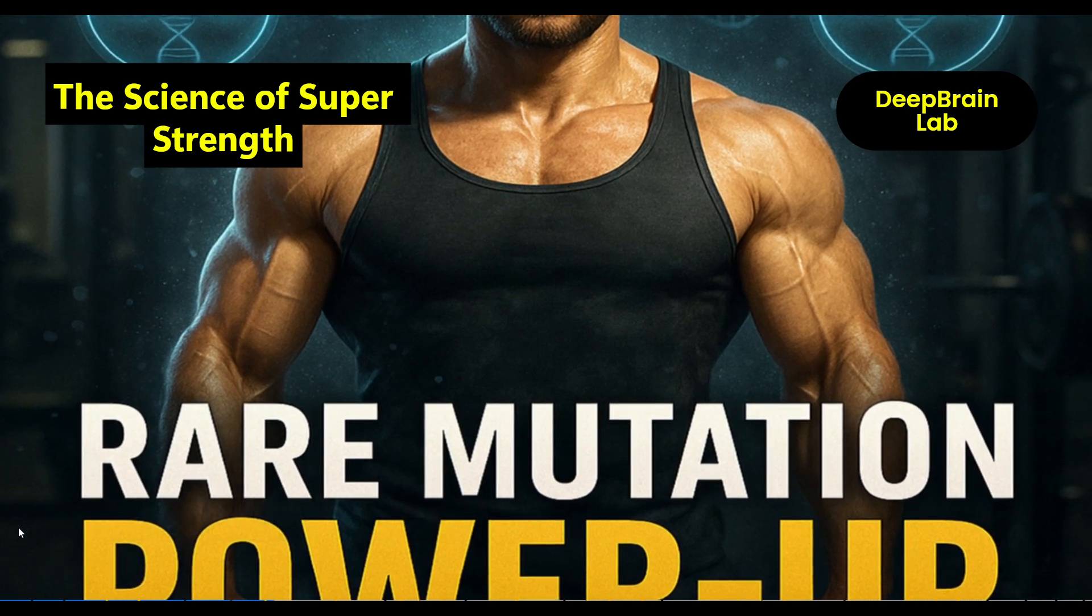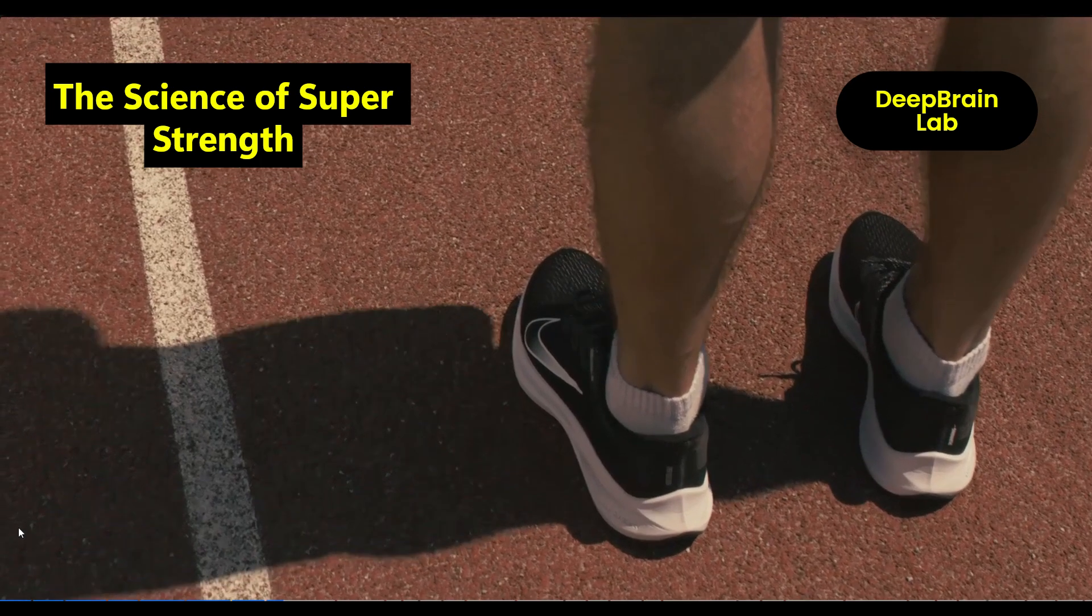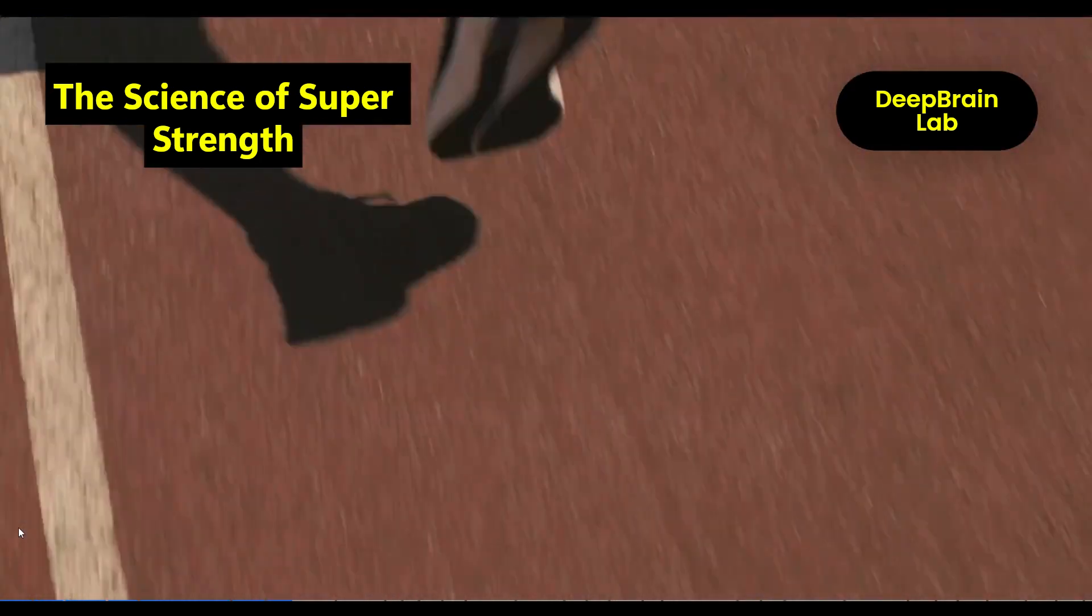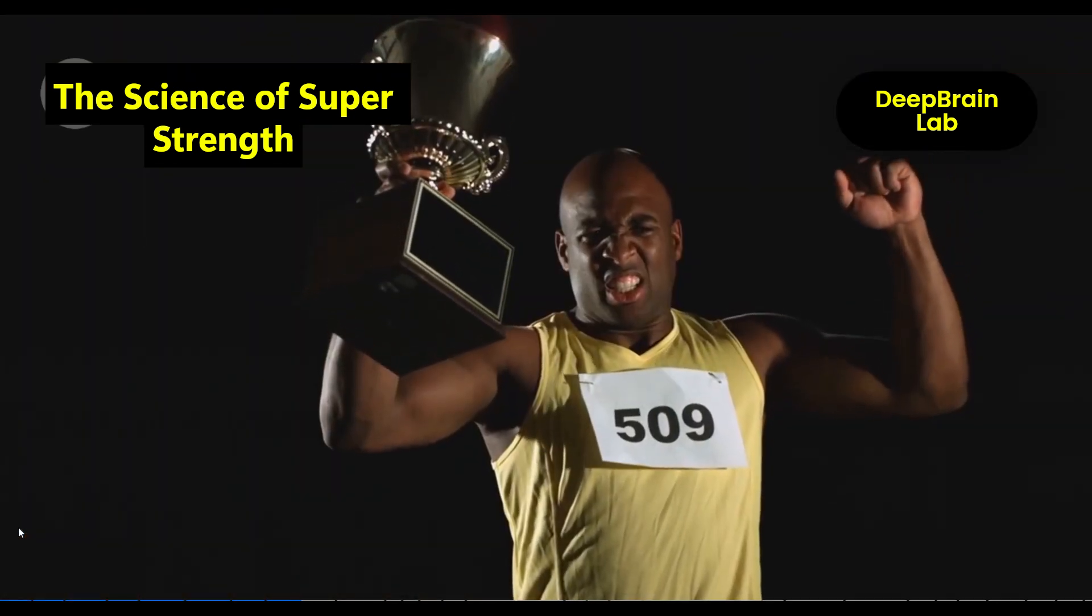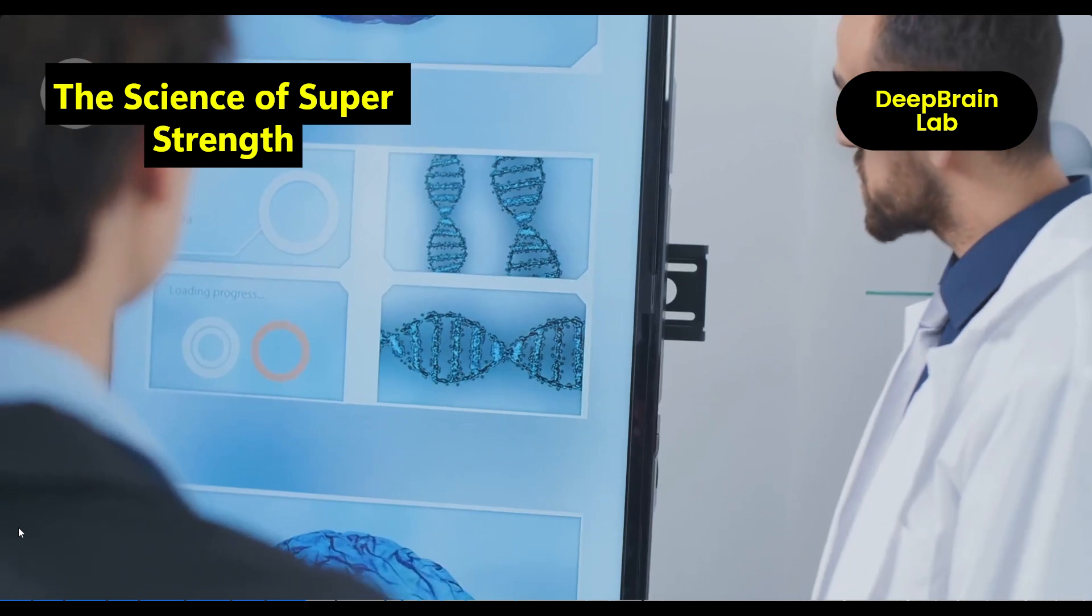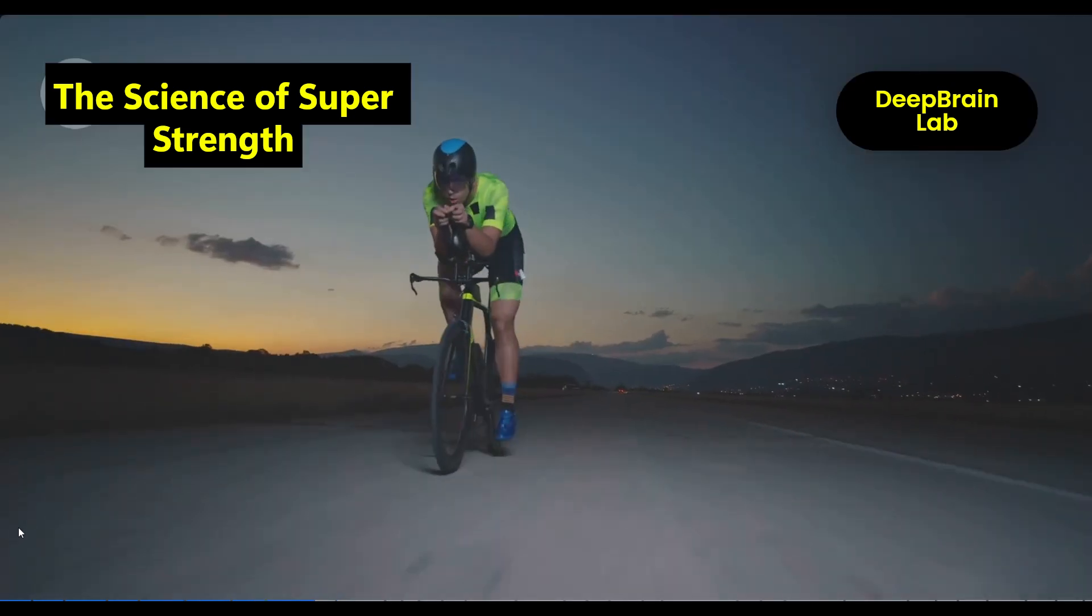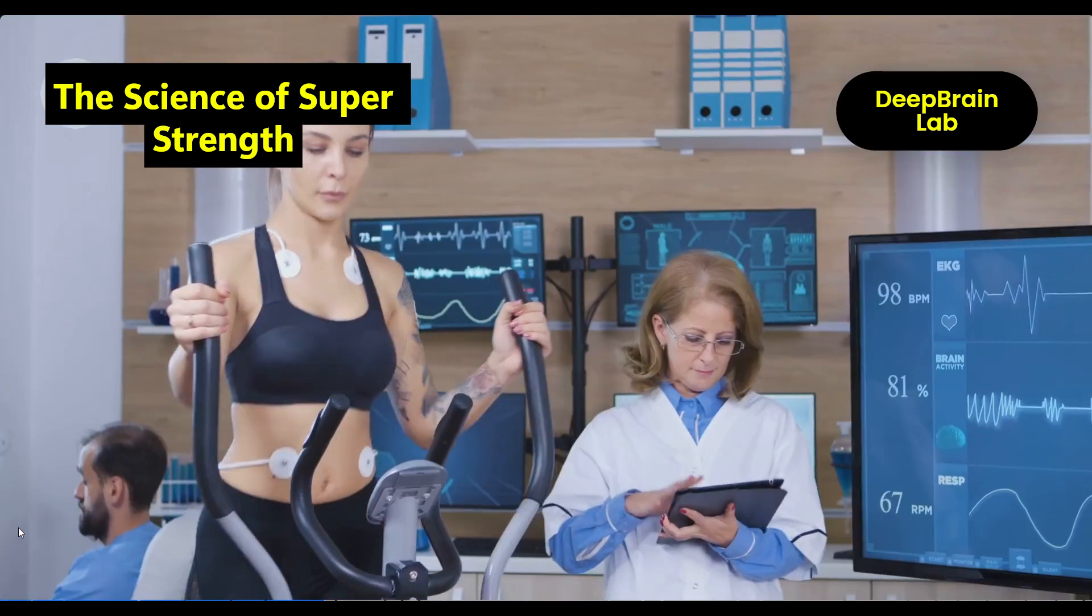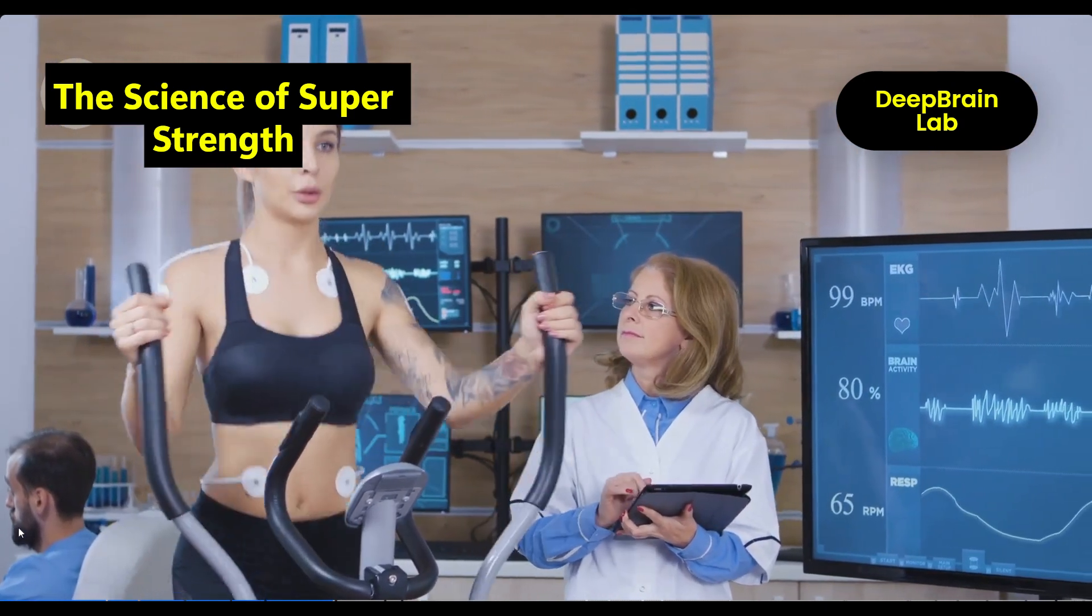Now meet the ACTN3 gene, nicknamed the sprint gene. If you have a working copy called 577 RR, your muscles produce more of a protein vital for fast-twitch fibers. Most elite sprinters and powerlifters have this version. On the other hand, the 577 XX variant is more common in endurance athletes. And then there's the ACE gene: one version helps your body become more power-oriented, the other more endurance-focused.